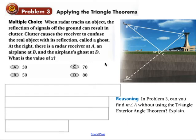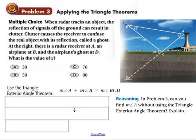Here's a problem using airports and radar. It says, when radar tracks an object, the reflection of signals off the ground can result in clutter. Clutter causes the receiver to confuse the real object with its reflection, called a ghost. So at the right, there's a radar receiver at A, and an airplane at B, and the airplane's ghost is down here at D. What is the value of angle X? Well, we know that 80 degrees is an exterior angle, and X plus the other 30 degree angle will give us the measure of 80 degrees when they're added together. So if we set up our equation, the measure of angle A plus the measure of angle B will give us the measure of angle BCD. BCD is the 80 degree angle.